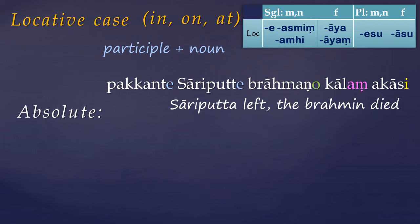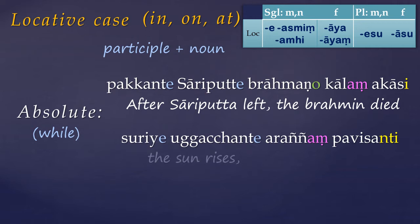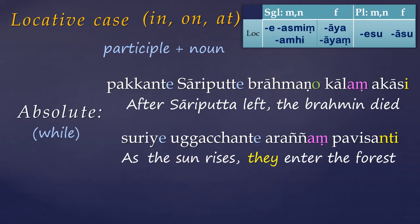But without the usual locative meaning of in or at; instead it implies while, when, or after — the situation of the absolute clause either occurring simultaneously with the action of the main clause, or just before it. For another example, agachante is a present participle agreeing with its subject surie in gender, case and number — the sun rises — while the main verb has an implied plural subject, they. So we get: as the sun rises, they enter the forest.